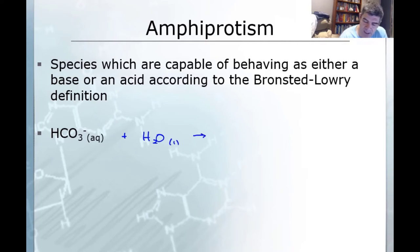In this particular example, we're going to demonstrate the hydrogen carbonate or bicarbonate ion acting as an acid. So if it's an acid, it's a proton donor. It's going to lose a proton and therefore become CO₃²⁻ in solution and it will lose that proton to the water. So the water will become an H₃O⁺ ion.